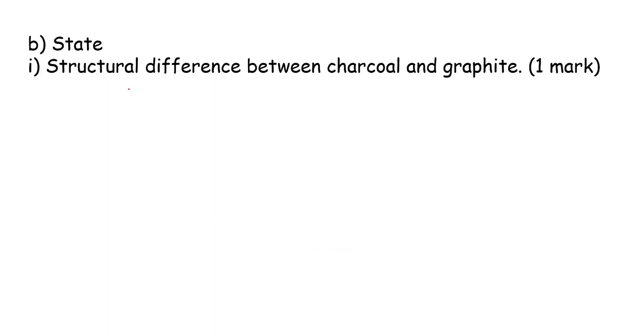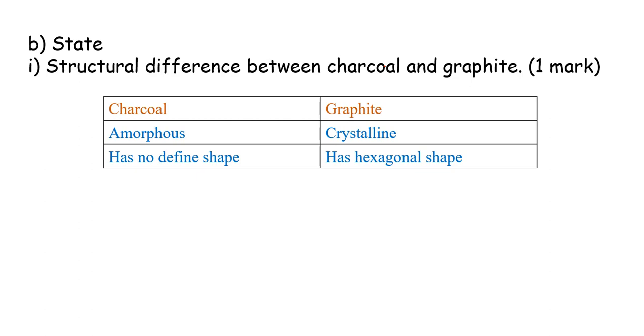Part B: State structural difference between charcoal and graphite. They just need only one structural difference. When you look at charcoal and graphite, we can note down these two differences. We can say graphite is crystalline while charcoal is amorphous in nature. What we mean by crystalline? Usually crystalline, you have a definite shape. There's a shape you can say that these atoms are arranged in this format. While with charcoal being amorphous, it will not have any regular shape. So it has no definite shape.